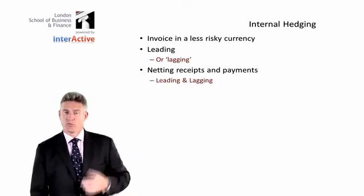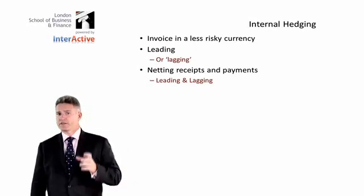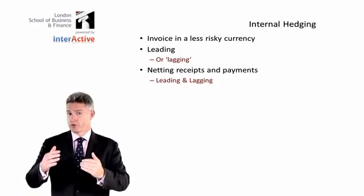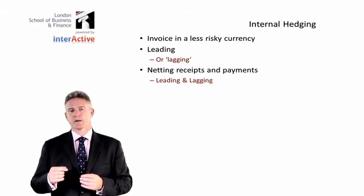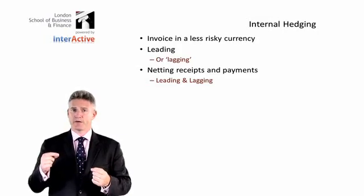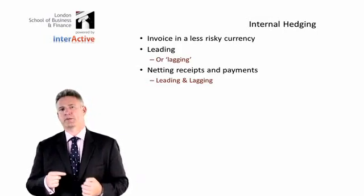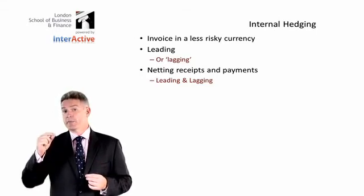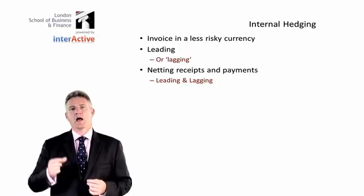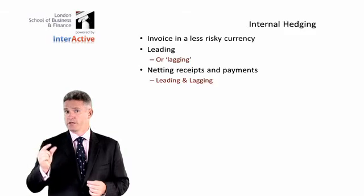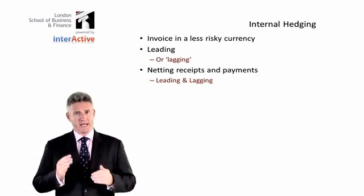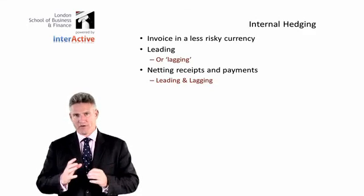We can couple netting off with the concept of leading and lagging. If I have a supplier I'm due to pay on the 30th of November and a customer from whom I'm expecting a receipt on the 31st of December, rather than paying €2 million in November and then converting €3 million in December, I might pay that supplier one month late. So when I get my receipt of €3 million on time, I pay my €2 million to the supplier one month late, and my exchange rate risk is then just attached to the €1 million I receive net of both transactions. Lagging with payments makes more sense when coupled with netting off of receipts and payments.